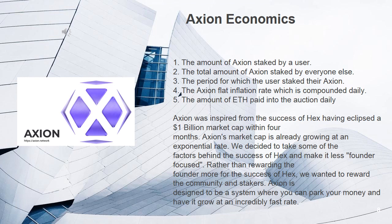Axion Economics. Axion generates interest through the idea of inflation. The Axion smart contract pays out Axion to reward stakers based on 5 basic principles: 1. The amount of Axion staked by a user. 2. The total amount of Axion staked by everyone else. 3. The period for which the user staked their Axion. 4. The Axion flat inflation rate, which is compounded daily. 5. The amount of ETH paid into the auction daily.